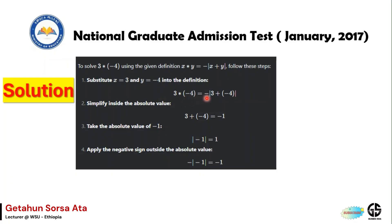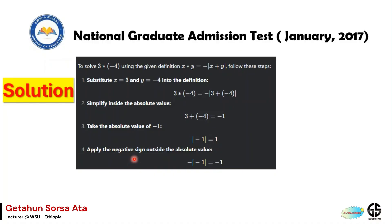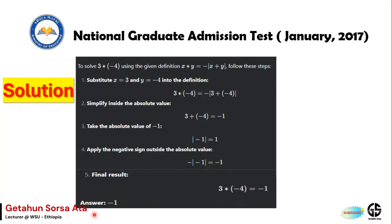Substituting gives us minus the absolute value of 3 plus (−4). Simplifying inside the bracket: 3 + (−4) = −1. Taking the absolute value of −1 gives 1. Applying the negative sign outside gives minus 1.